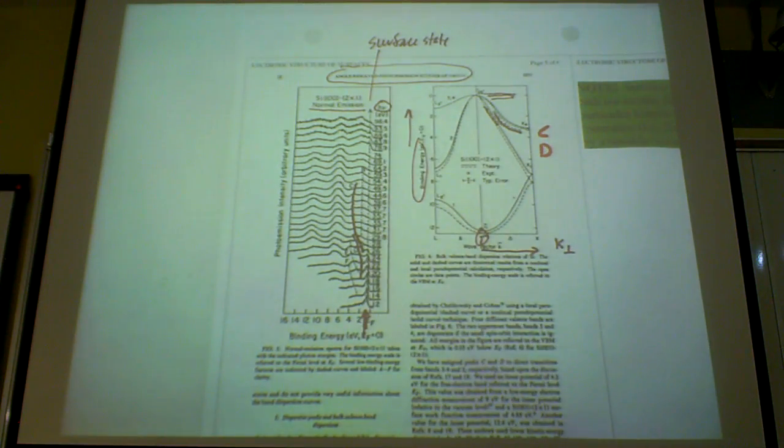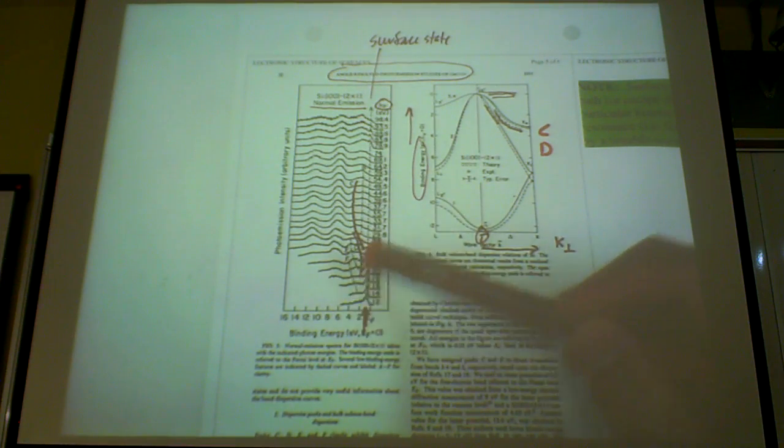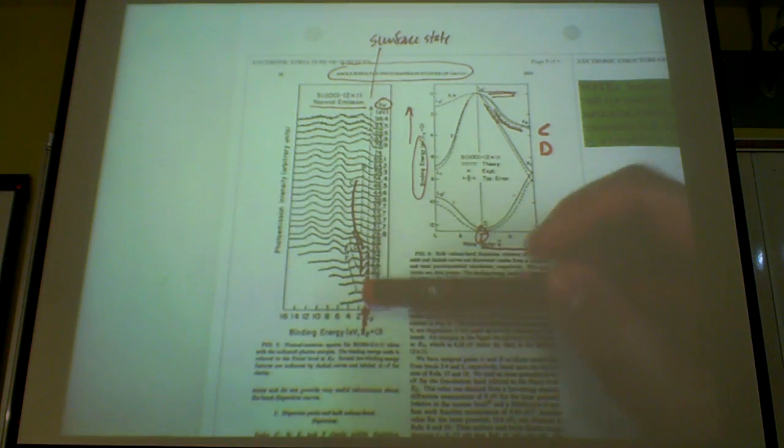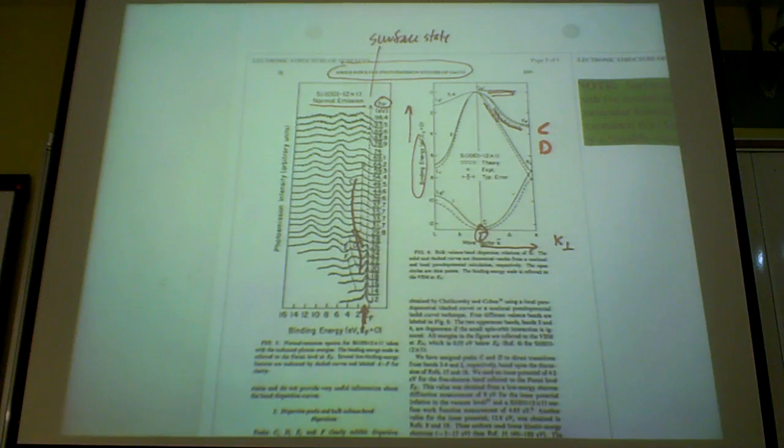You can see the signature of a surface state very quickly if you can change your photon energy. You just take measurements as you go through and find any state near the Fermi edge, because they have to be very close to the Fermi edge. And if it's stationary, that is a surface state.